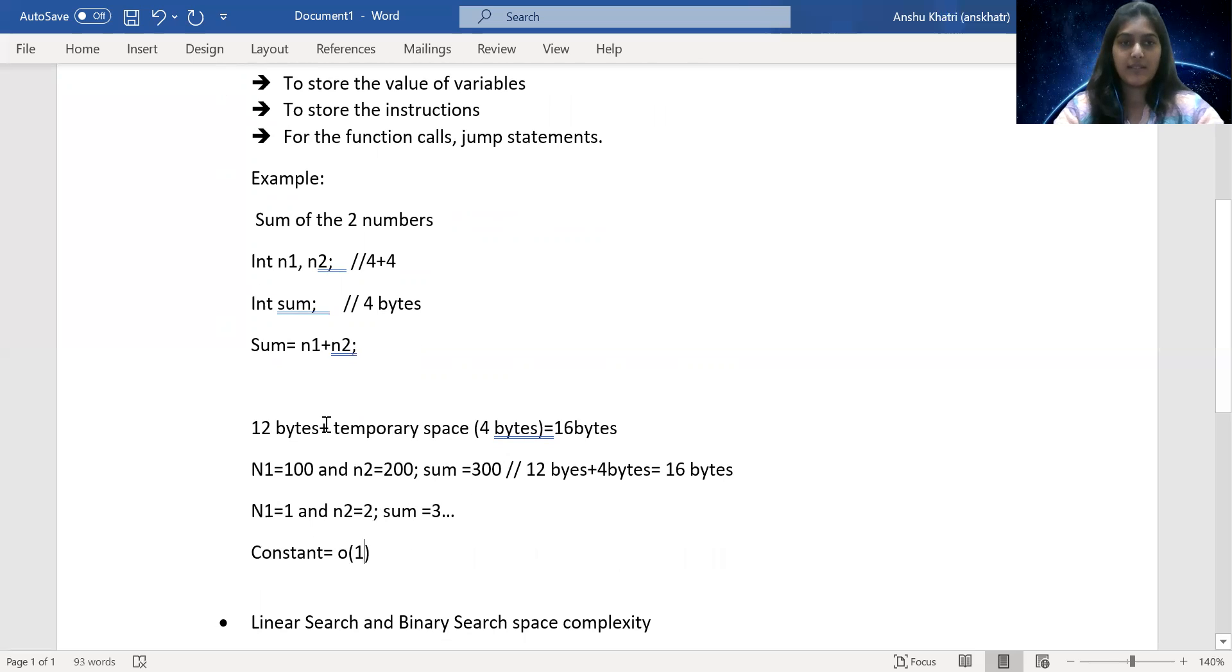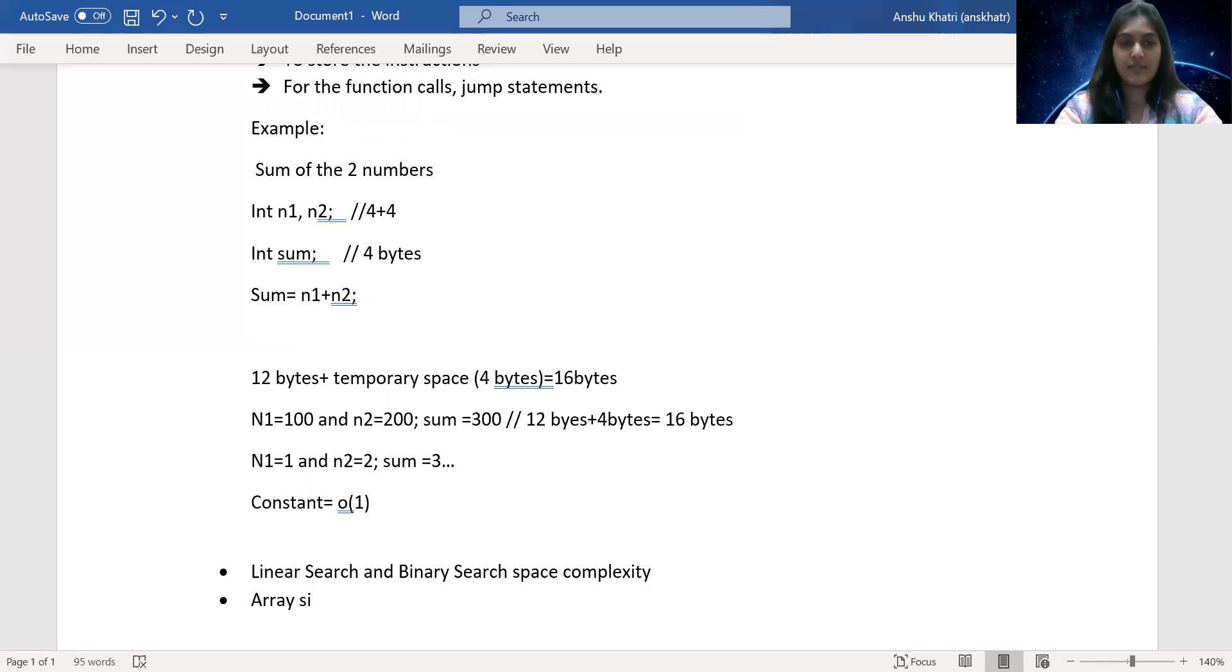So with this discussion, I think you would be able to derive the space complexity for linear and binary search because here also our array size is fixed. So I'm not taking any extra storage to perform the search operation. My array size is fixed. And if I want to search for any element, I'm just checking one by one every item in linear search and the middle most element in the binary search. So the space complexity is going to be order of one.